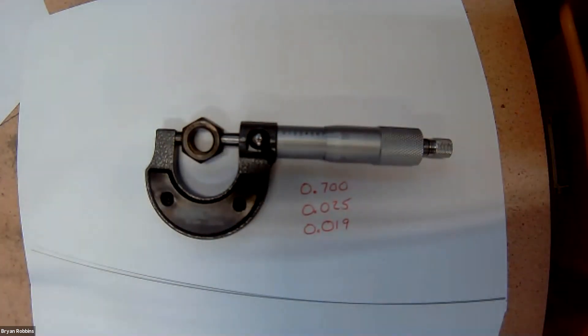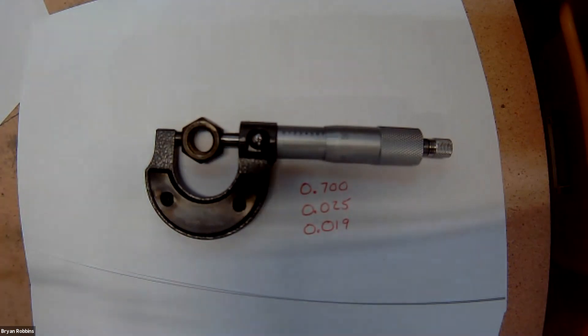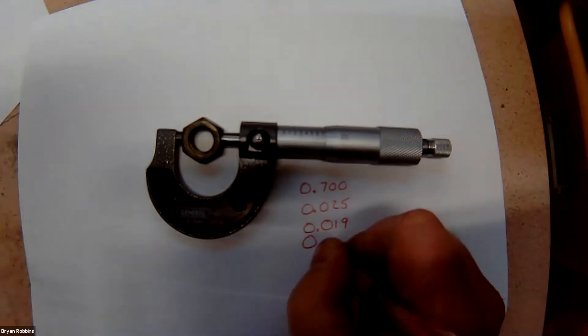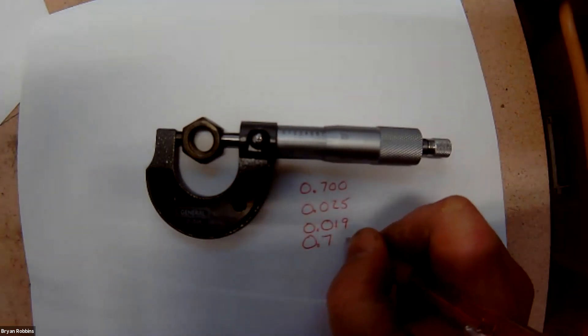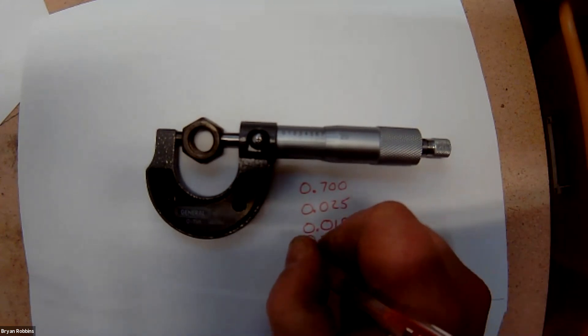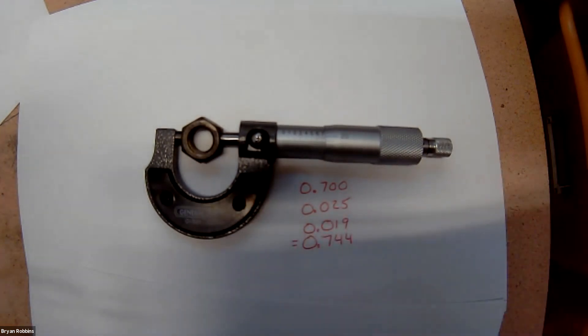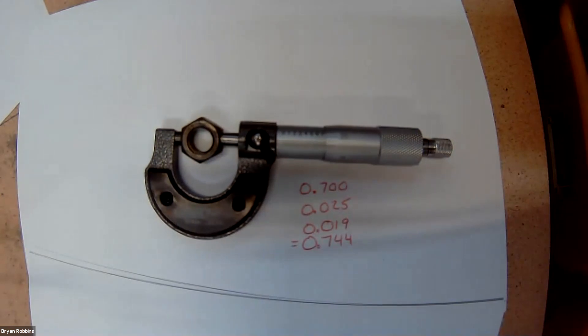So, now we can add that all together and get our final reading. So, that gave us a final reading on this object of seven hundred and forty-four thousandths of an inch, or 0.744. And that's it. The best possible thing you can do at this point is get out your micrometer and practice measuring items.